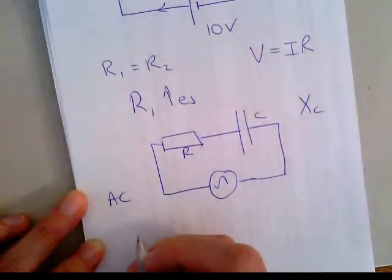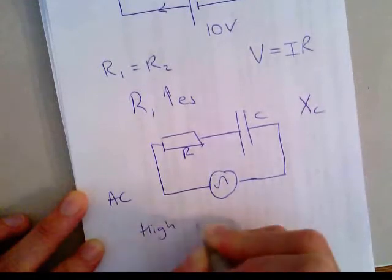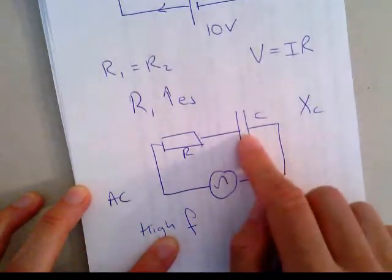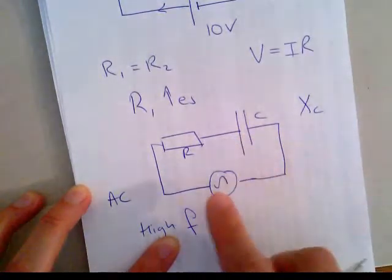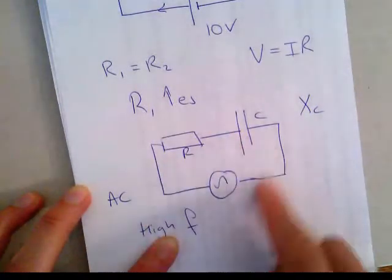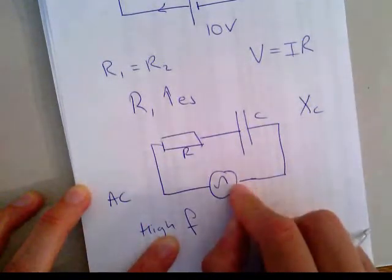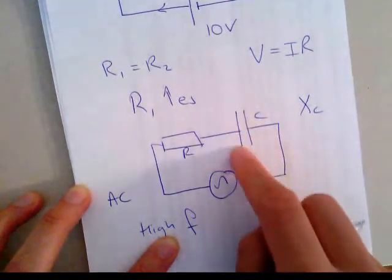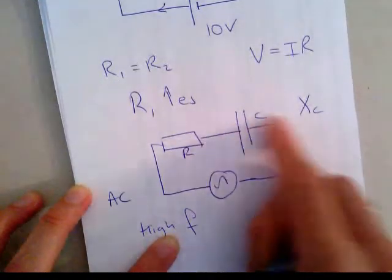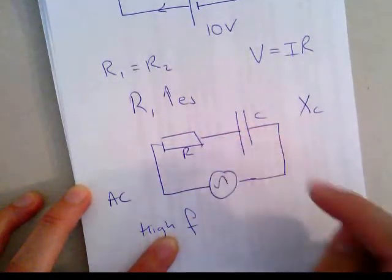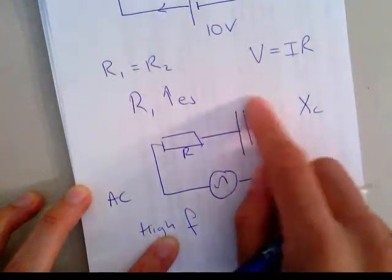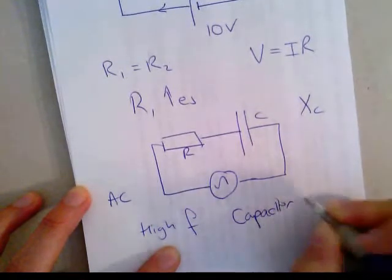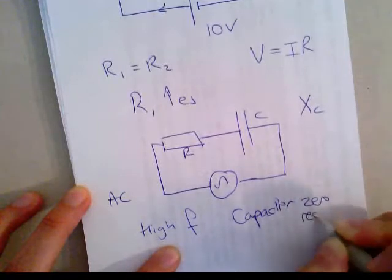The capacitor has a sort of resistance known as the reactance. If we have a high frequency signal, the change in direction of the current happens so quickly that the capacitor doesn't have time to charge up. In effect, it doesn't have an influence in the circuit — the current keeps changing direction so fast that the capacitor doesn't react. So it acts like a short circuit, meaning the capacitor has zero resistance.